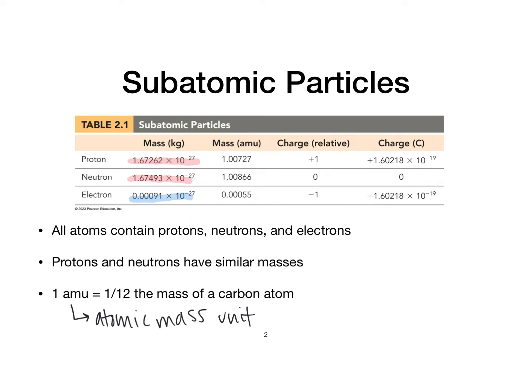We can also see the charges on these three particles, as shown here in this green box. The proton is positive, the neutron is neutral, and the electron is negative. We'll also note that the charges, whether proton or electron, are identical and opposite.